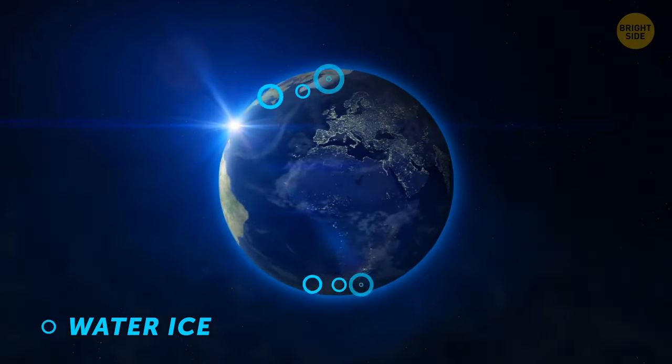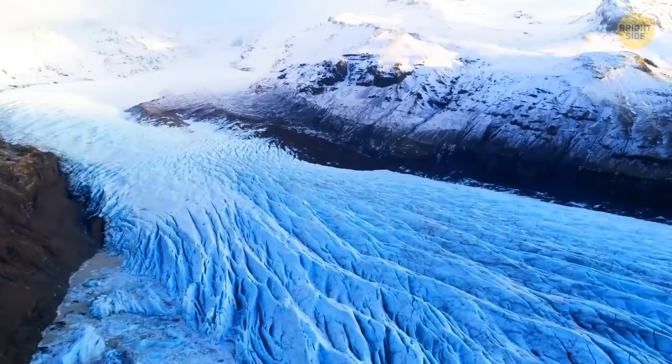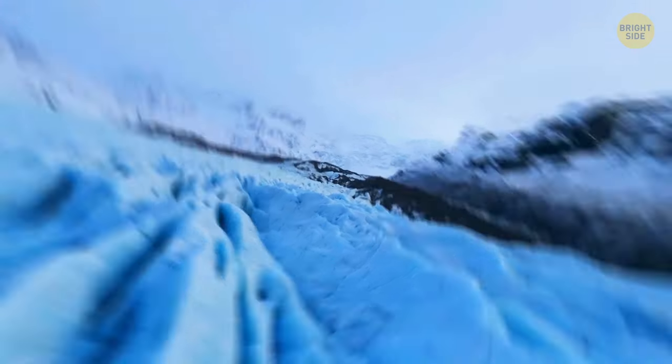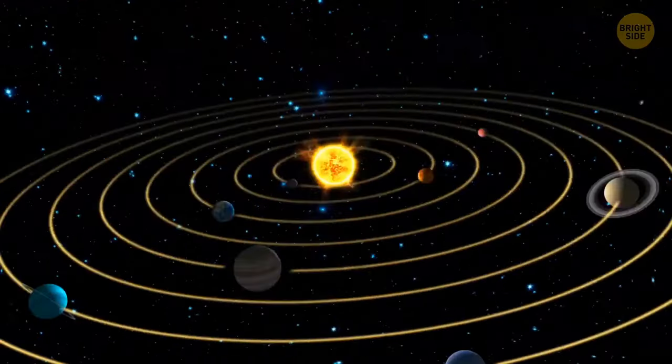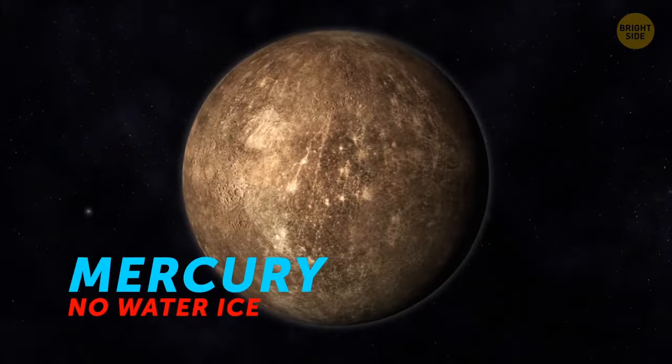Water ice was previously thought to be rare and only common for Earth, but it can in fact be found all over the solar system, even on Mercury and the Moon.